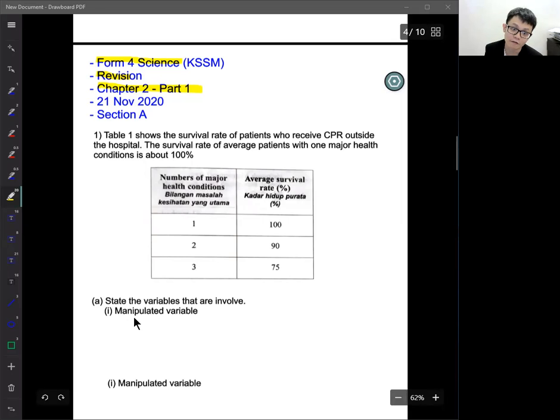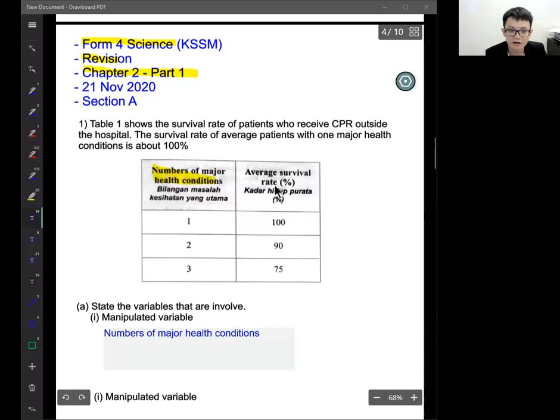What are the manipulated variable? The answer for this one is number of major health condition, this is the answer. How I know this answer? Actually, manipulated variable means something that you want to manipulate to change in order to do the experiment, the thing that you want to change.